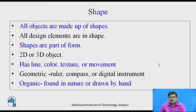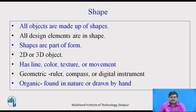Then we have shapes. All objects have shapes or are made up of shapes. All design elements are in a certain kind of shape. Shapes are a part of form — mostly 2D, in some cases 3D. Shape has line, color, texture, and can have movement in space. Shapes are classified into two forms: geometric and organic. Geometric shapes are drawn with the help of ruler, compass, or digital instruments. Organic shapes are those found in nature or drawn by hand, like the irregular shape of a stone or a tree.